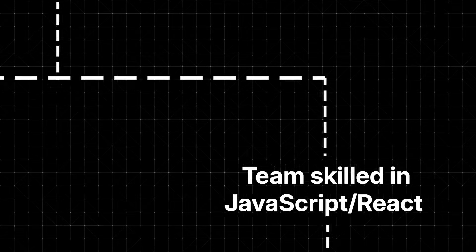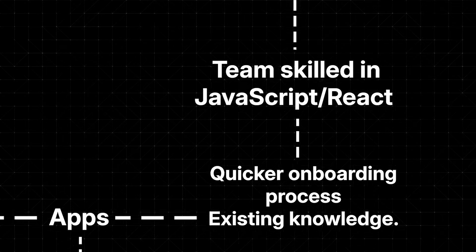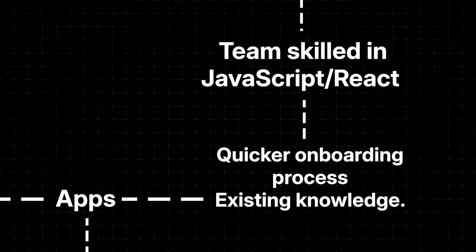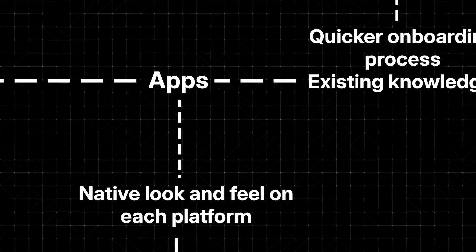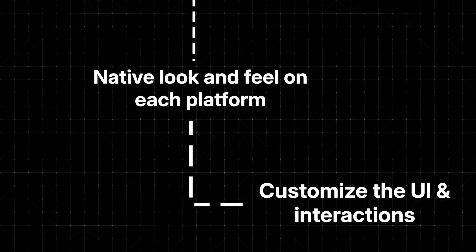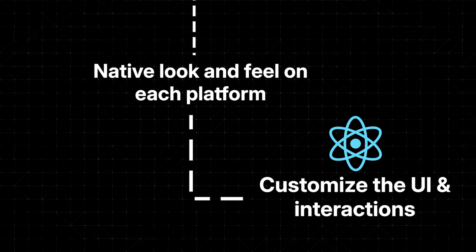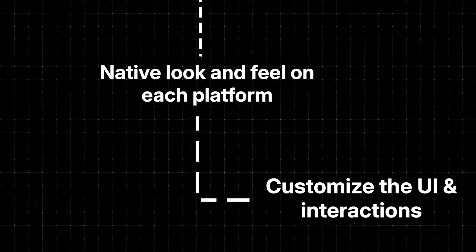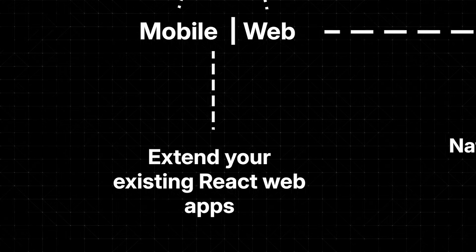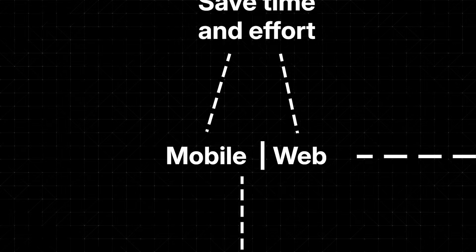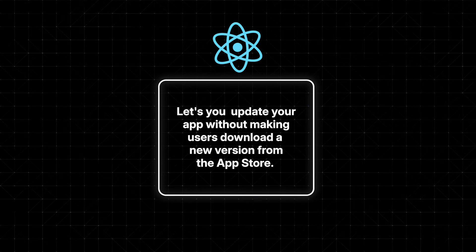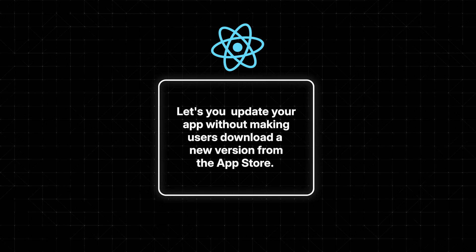That all said, there are good reasons why you might want to go with React Native. It's a good pick if your team is already skilled in JavaScript or has experience with React, as it offers a quicker onboarding process and lets you use your existing knowledge. If your app requires a truly native look and feel on each platform, React Native's use of native components can really work in your favor. React Native also makes it easy to share code between web and mobile platforms, saving time and effort in development. Plus, it has a big community and solid ecosystem, making it way easier to find solutions to common issues. Finally, React Native can be configured to let you push updates to your app without making users download a new version from the app store, giving you more flexibility for fixing bugs and releasing new features.